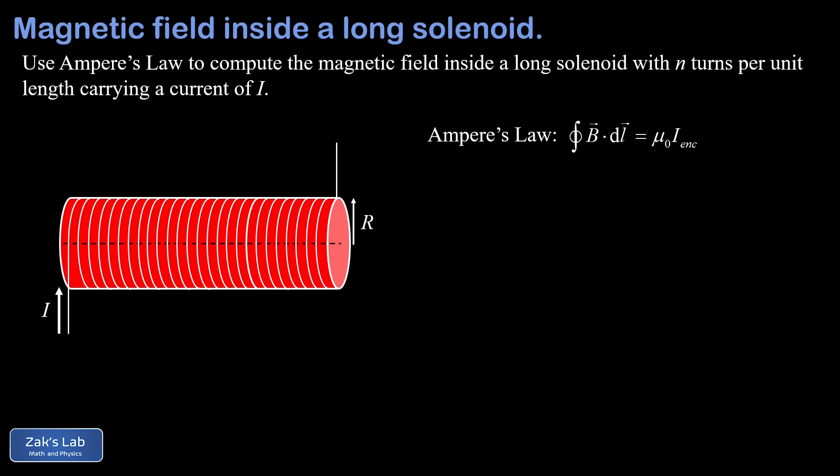In this video we're going to use Ampere's law to find the magnetic field inside and outside a long solenoid or coil of wire. We're told the solenoid carries a current of I and has little n turns per unit length, where little n is measured in turns per meter. There's a reminder of Ampere's law on the right side of the screen.